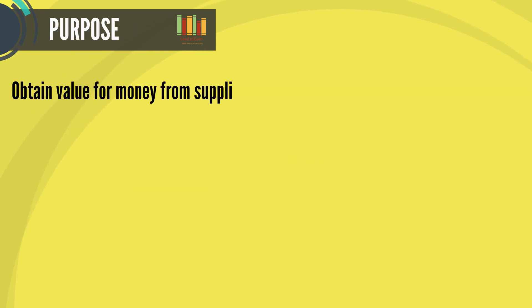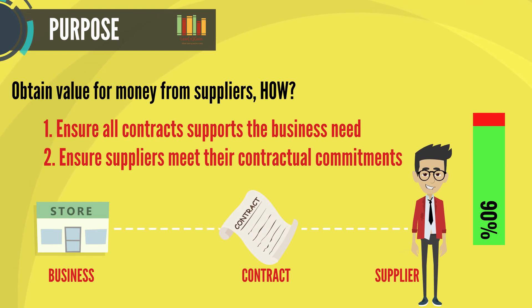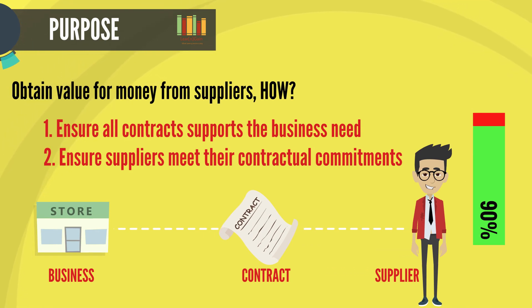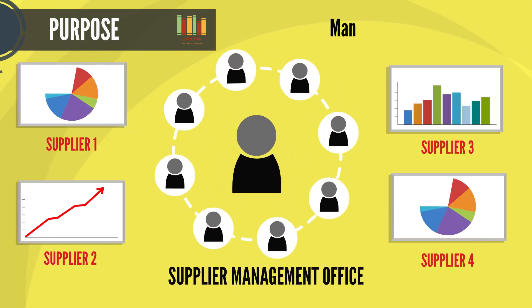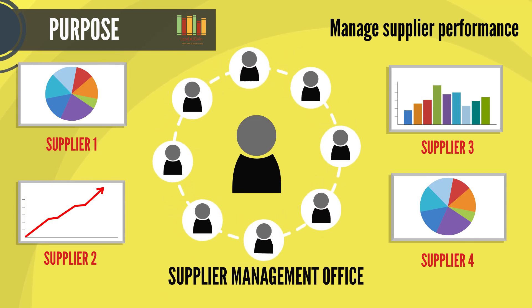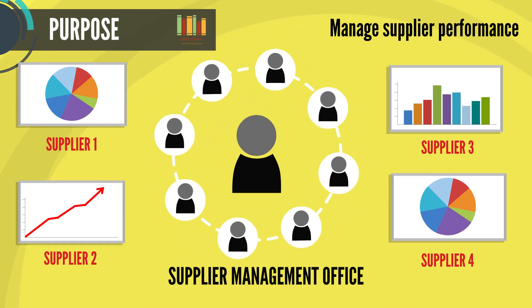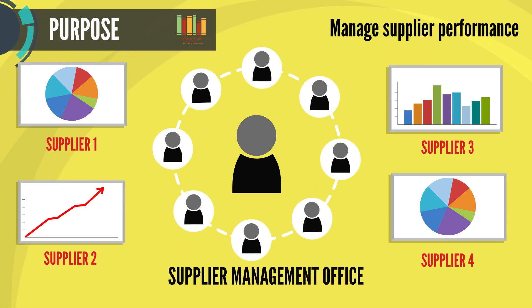The purpose is to obtain value for money from suppliers and to provide seamless quality of IT service to business, by ensuring all contractual agreements meet the business needs and that all suppliers meet their contractual requirements. The objectives are to obtain value for money, manage supplier relationships, supplier performance, and negotiate and agree contracts with suppliers and maintain supplier policy.